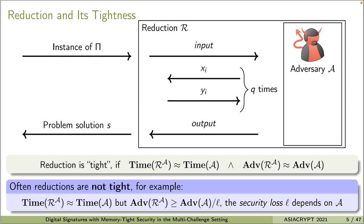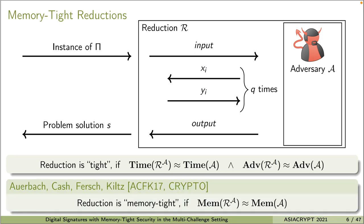It is very often that reductions are not tight. For example, we often see reductions such that the running time is tight but the advantage reduces by a factor of L. This factor L is called the security loss of the reduction R, and it is not tight if L depends on the adversary — for example, L equals the number of queries made by the adversary. Albach, Cache, Fesh, and Kiltz noticed that memory is also a valuable computational resource and should be considered as a measurement for reductions. They proposed the concept of memory-tight reductions. A reduction is memory-tight if the overall memory consumed by the reduction is approximately the same with the memory consumed by the adversary. This means the additional memory consumed by the reduction itself is little compared with the memory consumed by the adversary and is independent of the adversary.